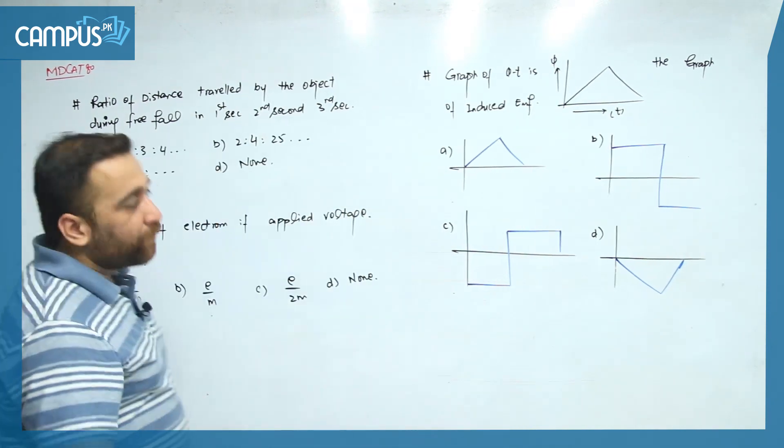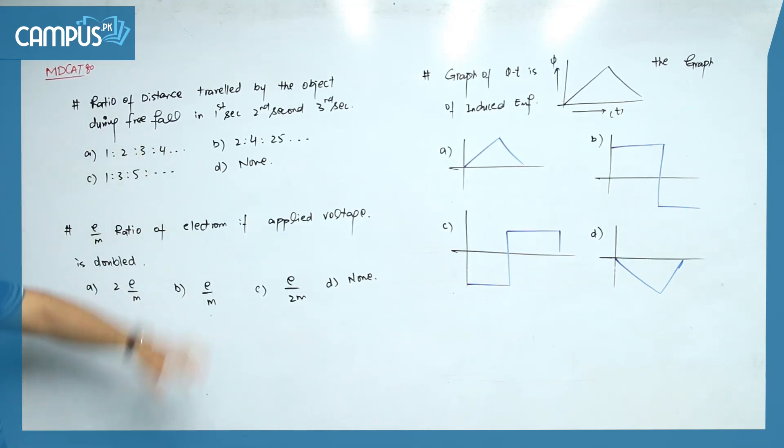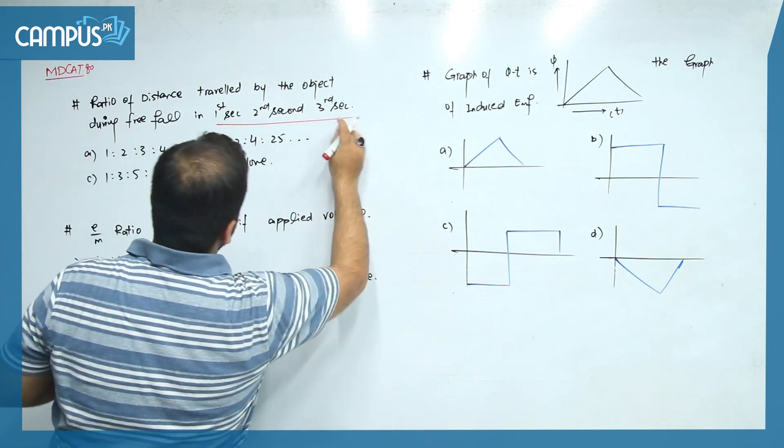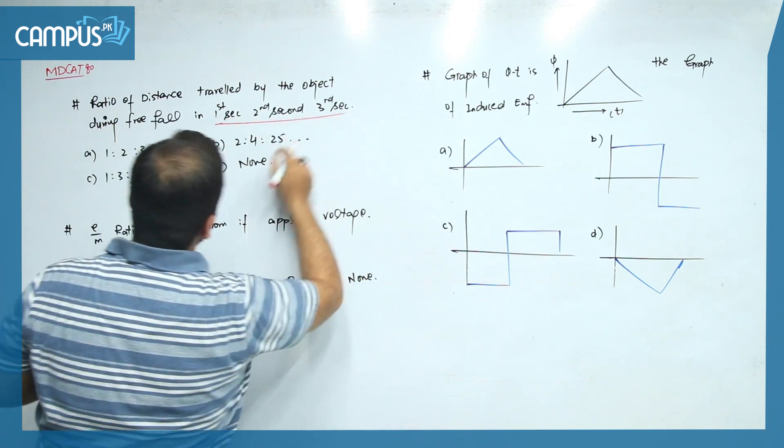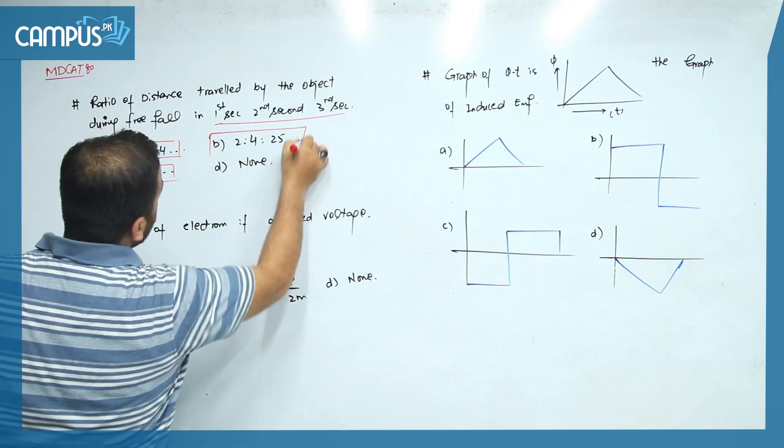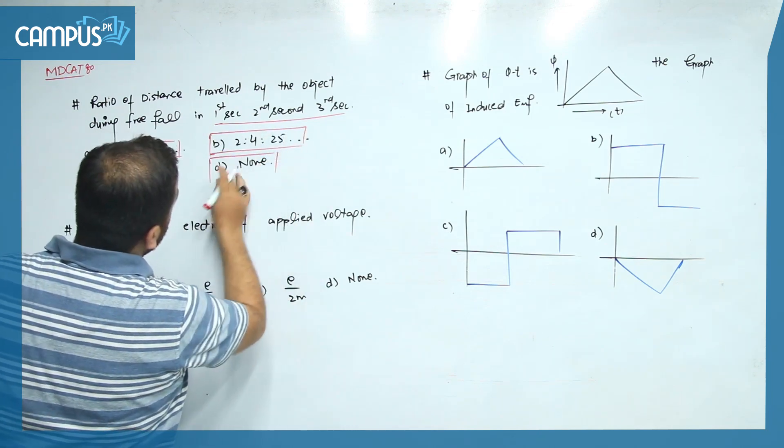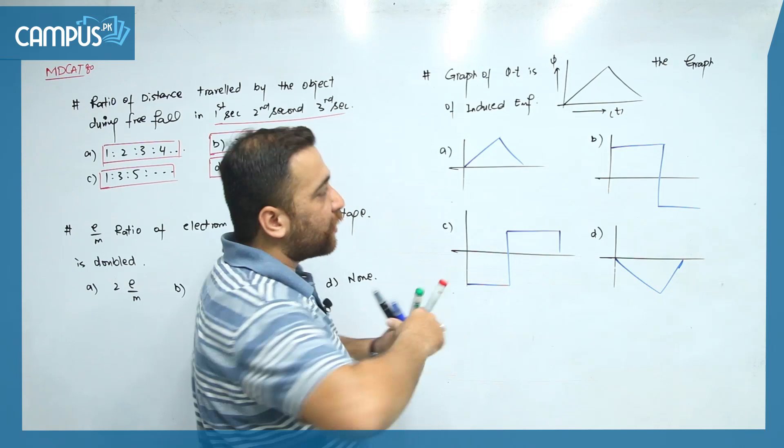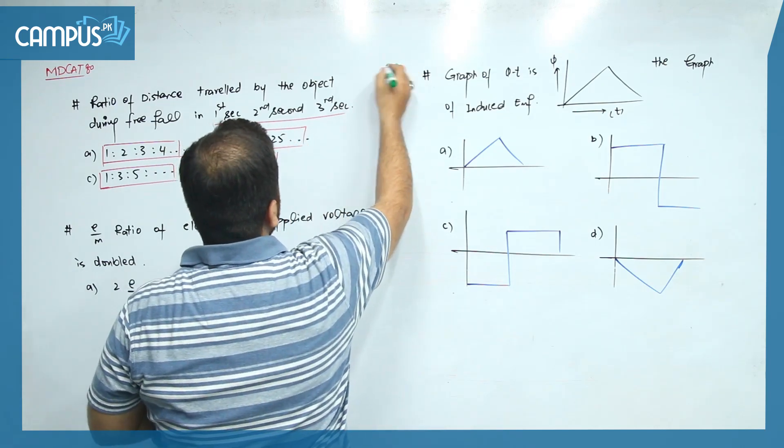Let's move to the first MCQ. The ratio of distance traveled by the object during free fall in first second, second second, and third second. The very basic problem that we face is we don't understand the question. You have to focus on keywords in the question and also focus on the options given. Let me explain the question. If something is in free fall, for example, you have a stopwatch.